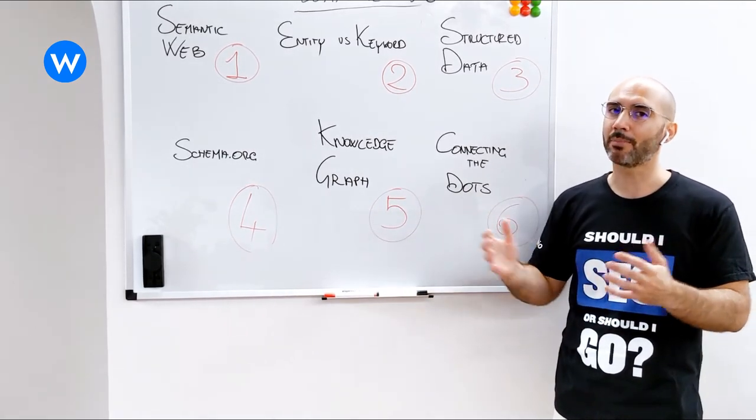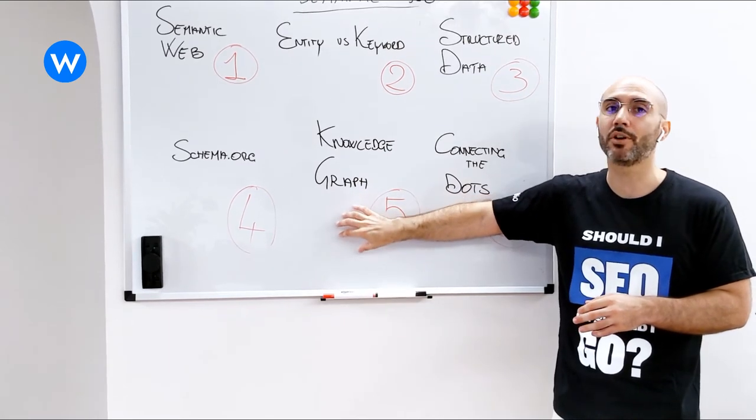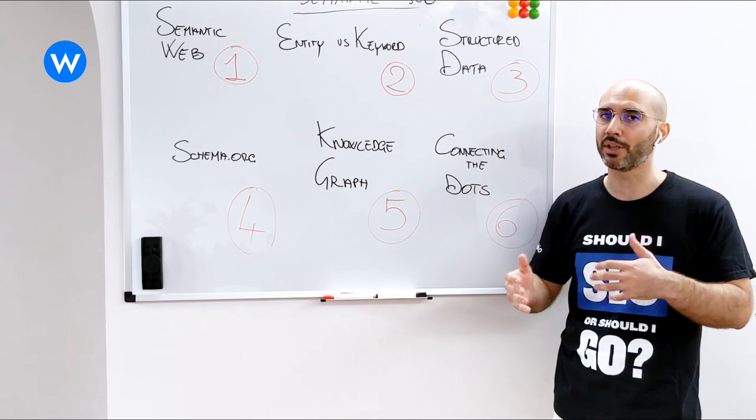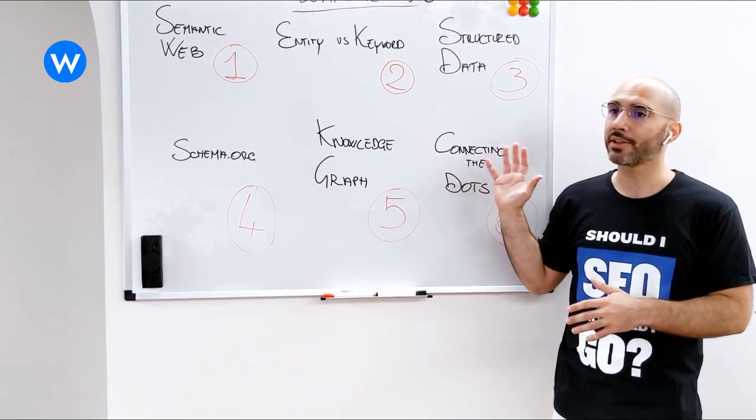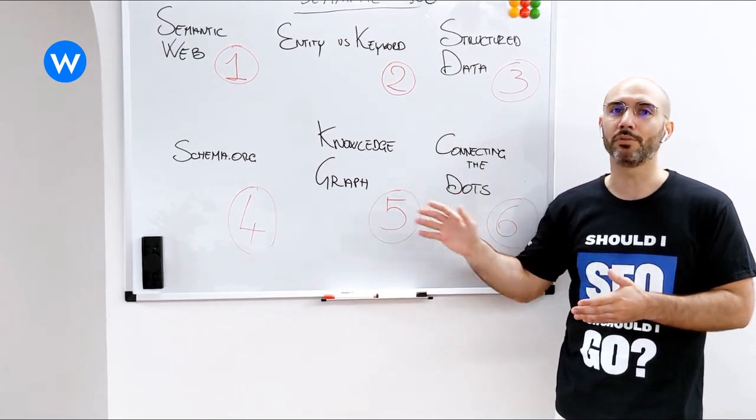And then we saw how we can actually build up a knowledge graph out of our schema when we publish this content as linked data, which is something that we do automatically with our software. So pretty much if you understand those concepts and if you understand the power of semantic web, then you're ready to go.